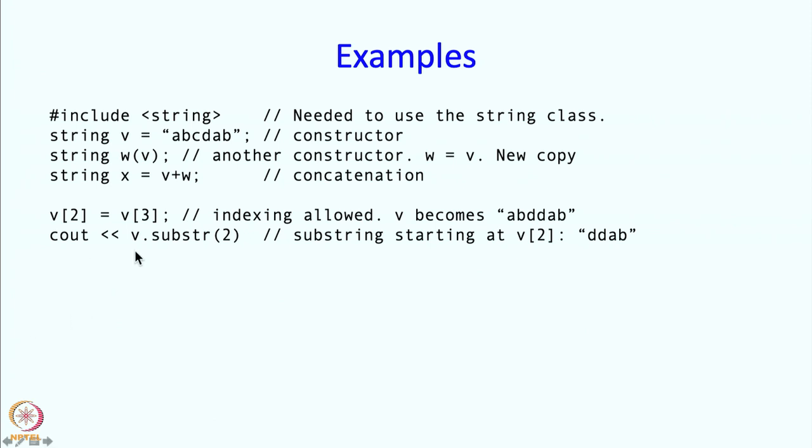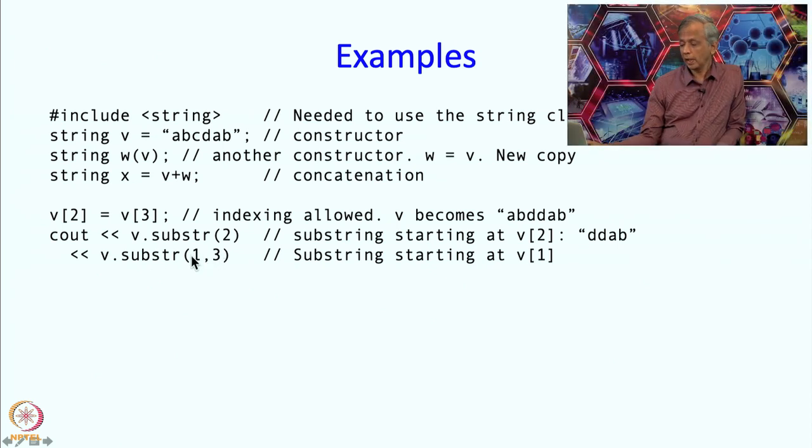Here is an interesting operation. We are doing cout v dot substring, I guess there should be a semicolon over here. But anyway, substring 2 means the substring of v starting at 2. This is v, so this is 0, 1, 2, but remember that we just changed the c to d. So the substring of this v starting at 2 will be ddab. v dot substring 1, 3 says that I want a substring which starts at 1 but whose length is 3. So substring of v which starts at 1, so 0, 1. It starts at b but its length is 3. So this will be bdd. For this part we will end up printing bdd.